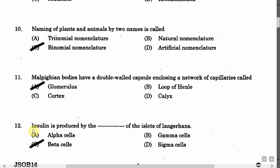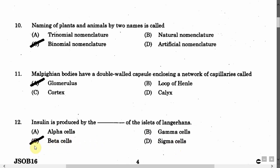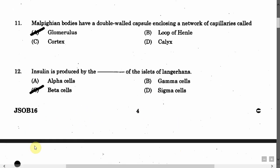The next question is: Insulin is produced by the cells of the islets of Langerhans. Option A: Alpha cells. Option B: Gamma cells. Option C: Beta cells. Option D: Sigma cells. The correct answer is Option C, that is beta cells.